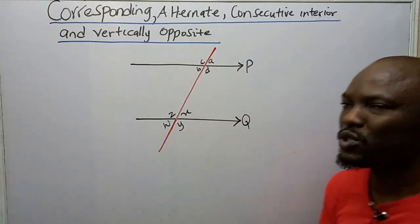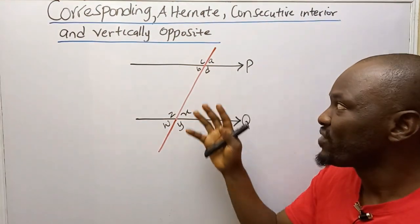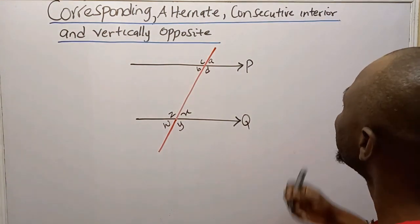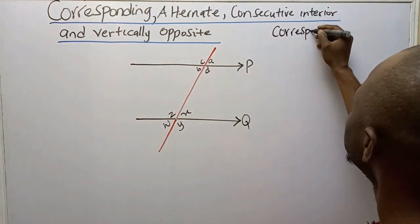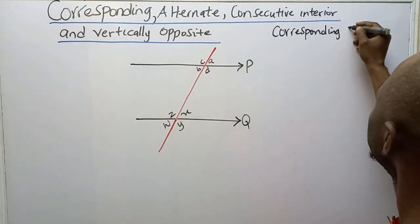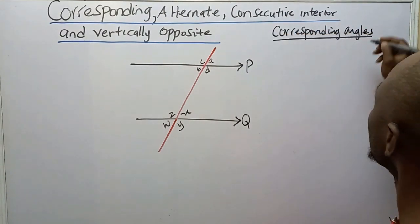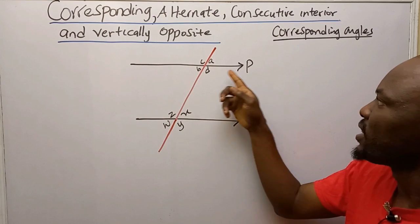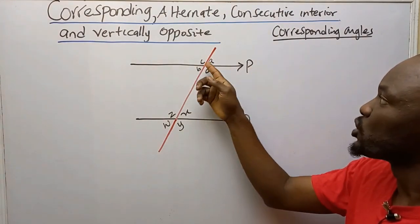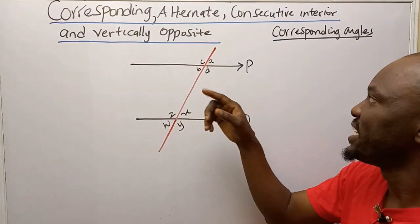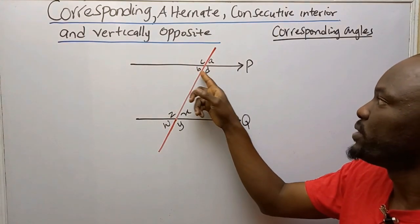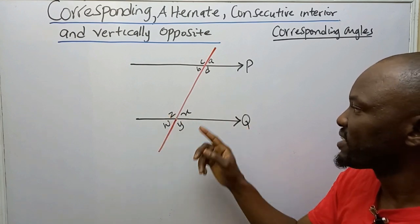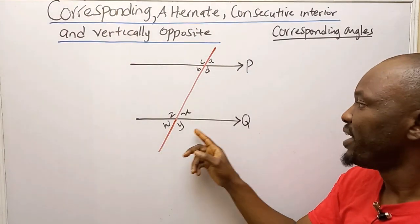Now I want to see the relationship between all of these angles within the parallel lines and outside the parallel lines. We'll be starting with corresponding angles. If you look at line P, I have two angles on top of line P which are C and A, and at the bottom of line P I have two angles B and D. Similarly on line Q, at the top I have Z and X, and at the bottom I have W and Y.